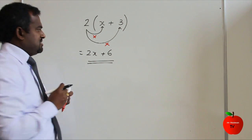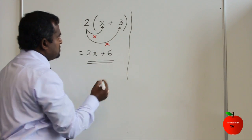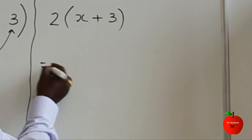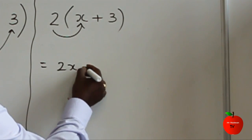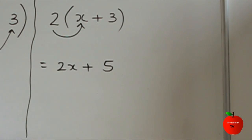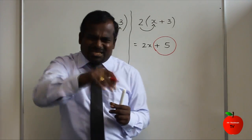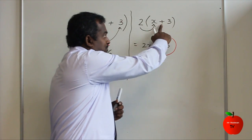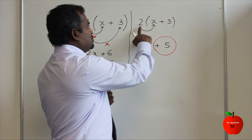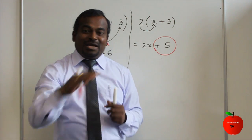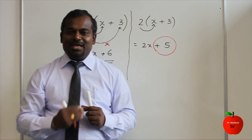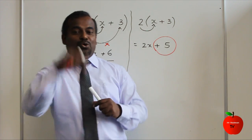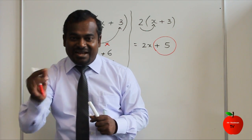Now let's talk about the mistakes people can make. Same question: 2 bracket X plus 3. They correctly do 2 times X to get 2X, but then they put 5 for the next term. That's the mistake — they think 2 plus 3 is 5 instead of multiplying. You must understand clearly: expand means each time you multiply.